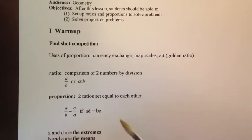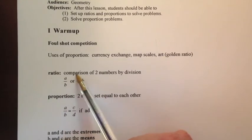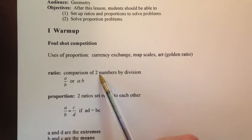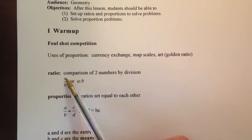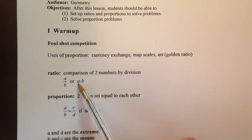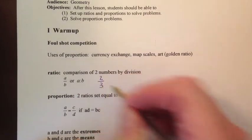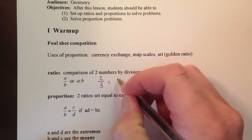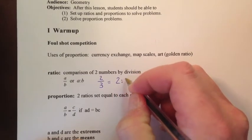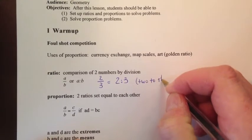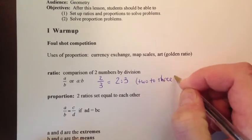A couple definitions to start off here. Ratio. Ratio is a comparison of two numbers by division. And we'll write that using two variables. You can write this as a fraction, a over b, or you can write it like this, a colon b. They both mean the same thing. As an example, if we say two over three, two-thirds, that's the same thing as two to three. And the way that we read that is two to three. It's a two to three ratio.